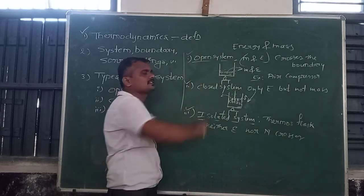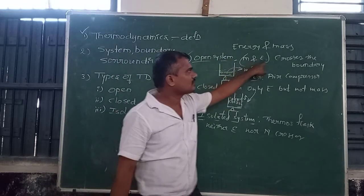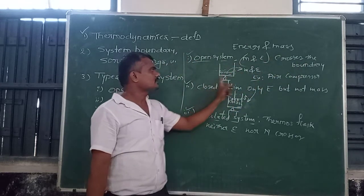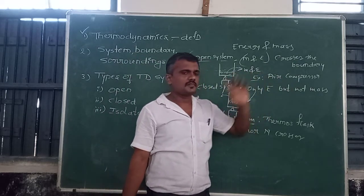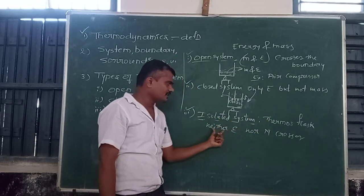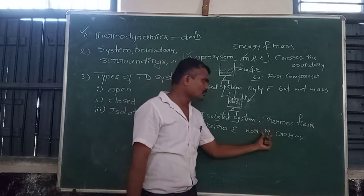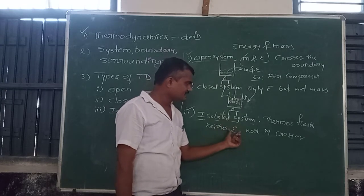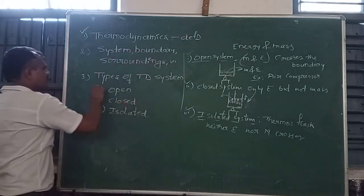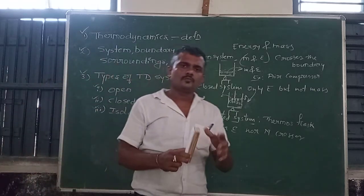To summarize: in a closed system, only energy crosses the boundary but not mass. In an open system, both mass and energy cross the boundary. In an isolated system, neither mass nor energy crosses the boundary limit — both mass and energy are not crossing the boundary. These are the three types: open system, closed system, and isolated system.